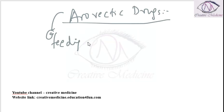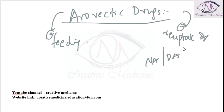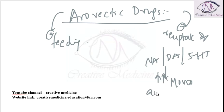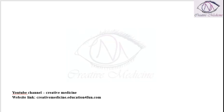These drugs act on inhibition of reuptake of noradrenaline, dopamine, or 5-hydroxytryptamine, thus increasing the monoaminergic transmission in the brain. The drugs which are approved are: first, we have Orlistat.